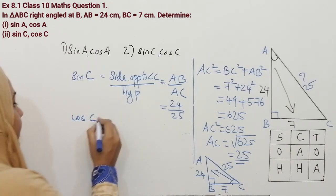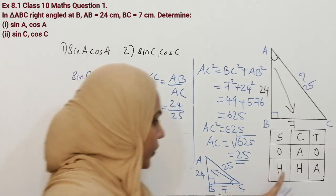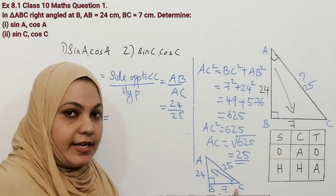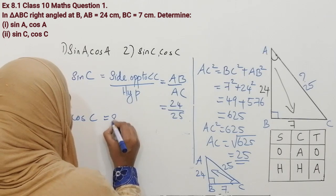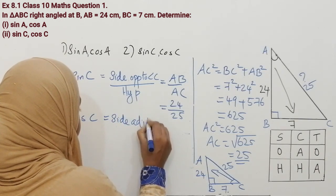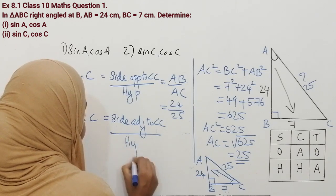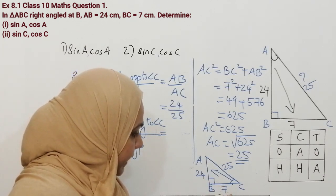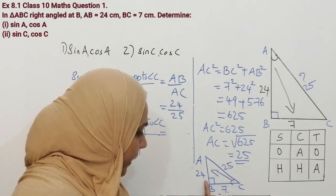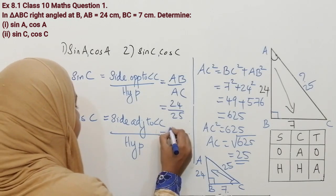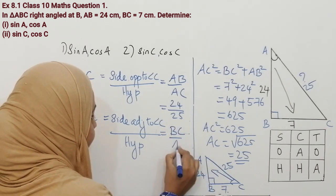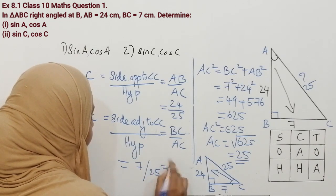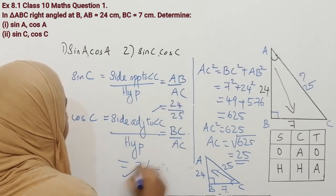Now let us find cos C. Cos means adjacent over hypotenuse. In trigonometry, adjacent means the side which contains the reference angle and the 90-degree angle. BC contains the reference angle C and the 90-degree angle, so the adjacent side is BC and hypotenuse is AC. BC is 7 and AC is 25, so cos C is 7 by 25. We got the answers for sin C and cos C. I hope you understood the first question of exercise 8.1.